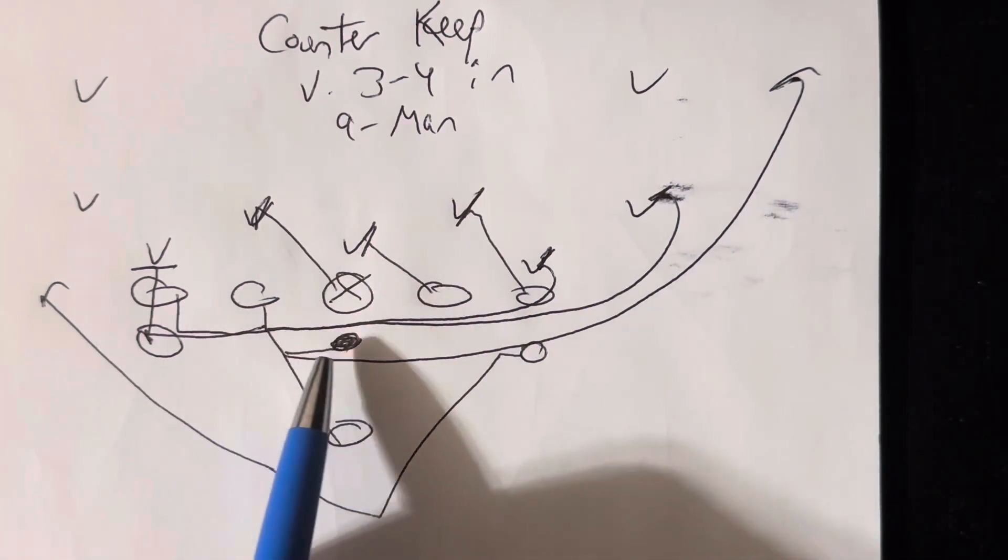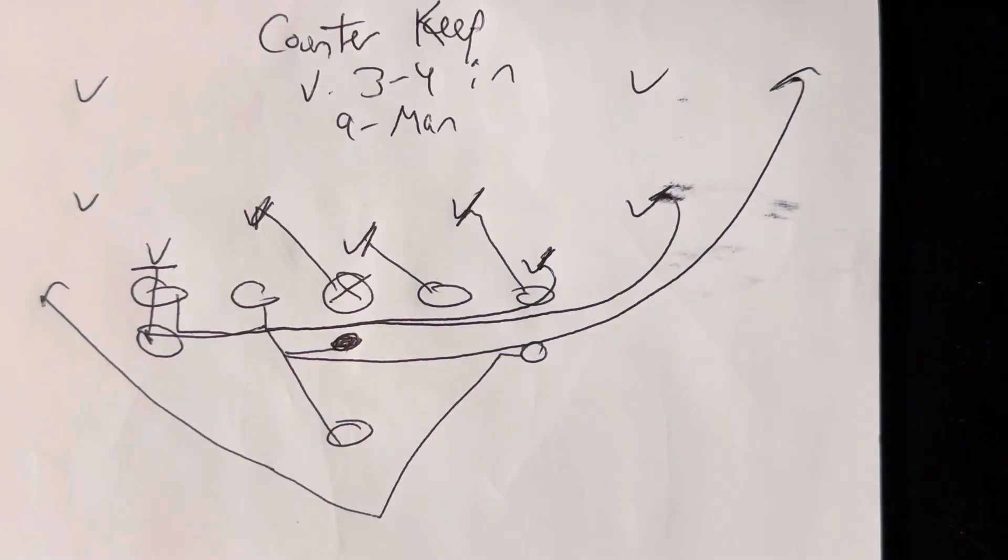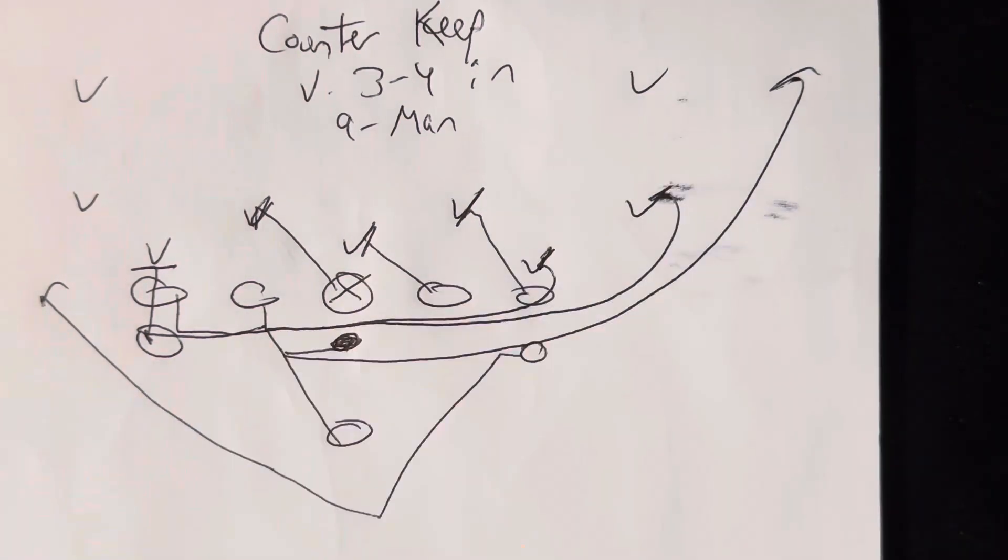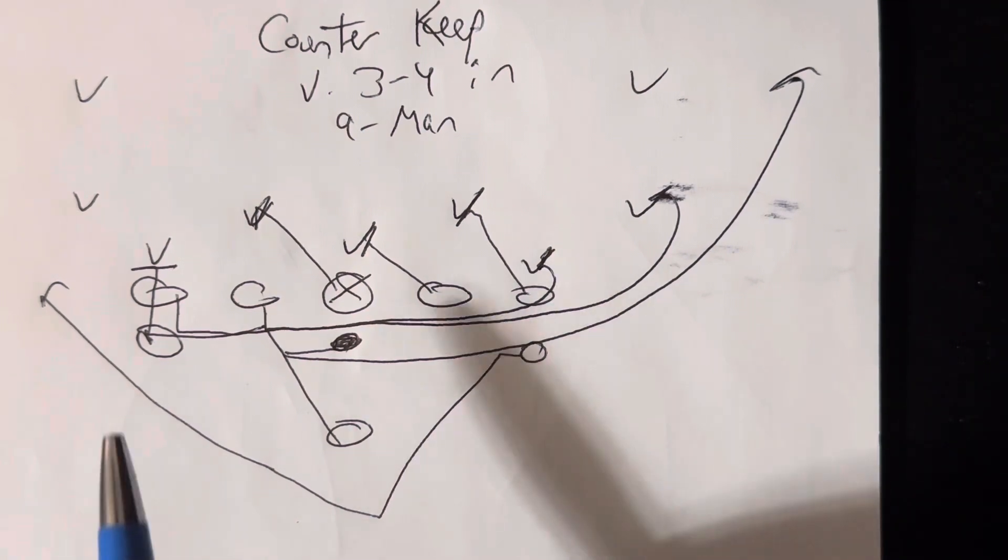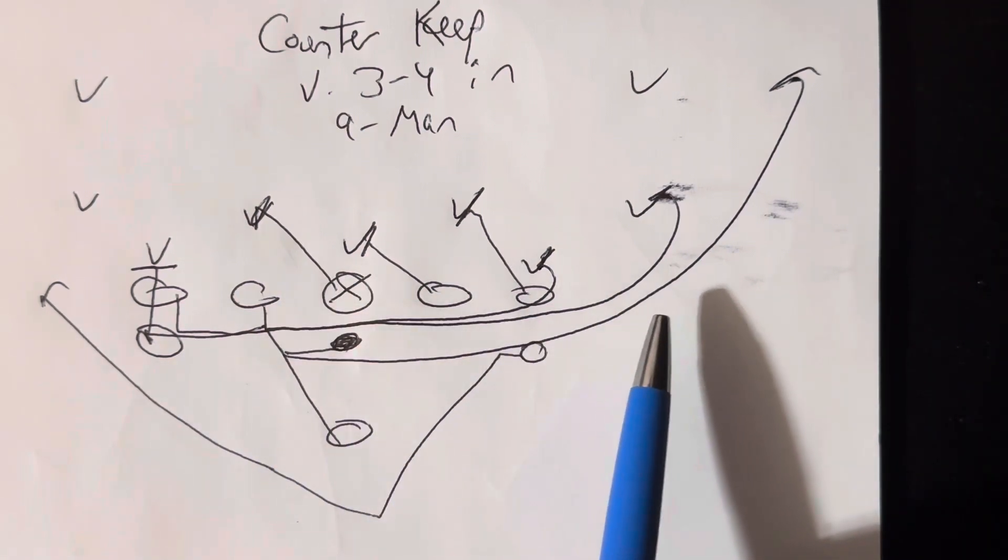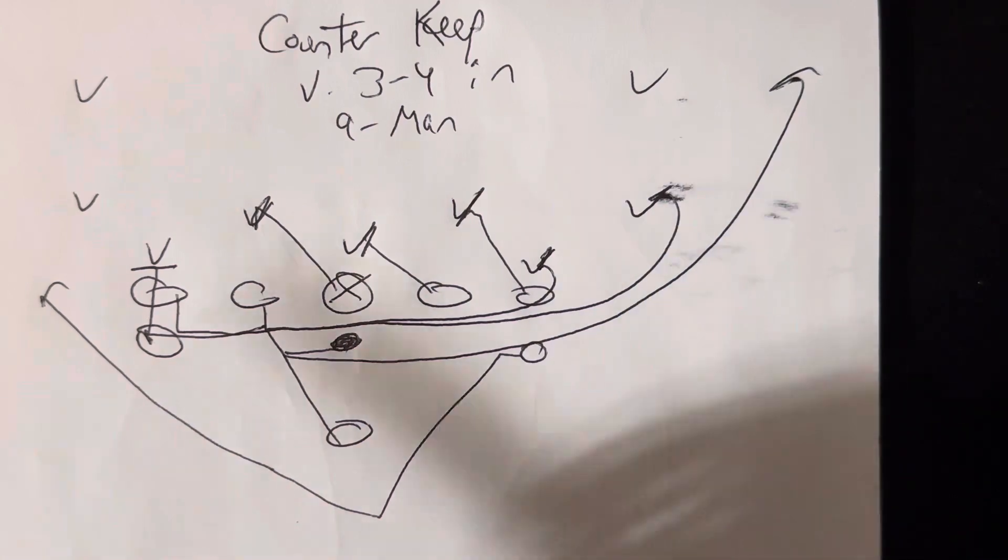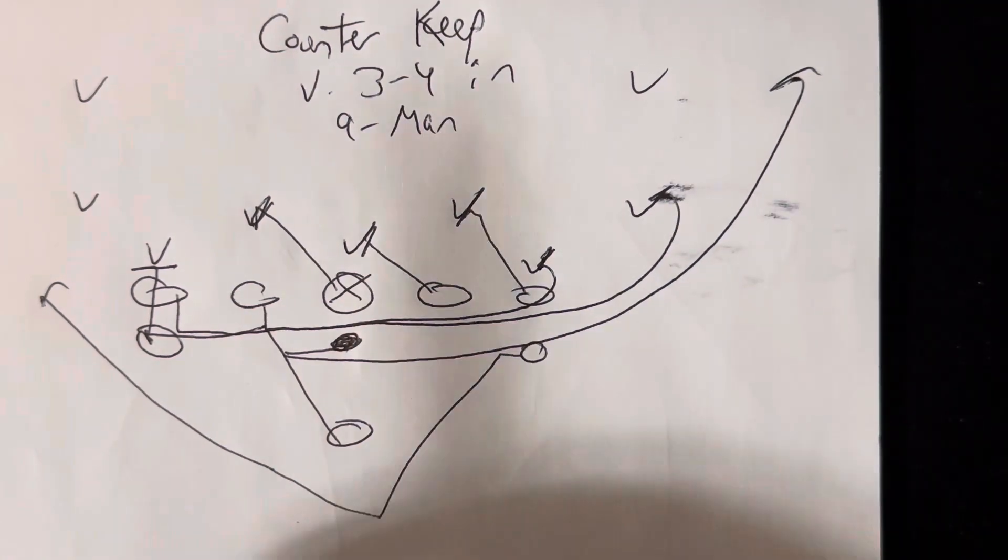The guard is going to pull, and he's going to get his left knee through the crotch of the first person off the end, left knee to the crotch, left hand to the stomach, four-inch northbound steps. The end will overlap the guard, and he will block the next widest player using the same technique.